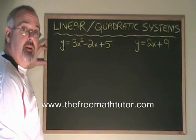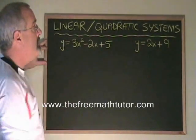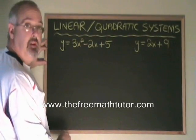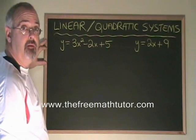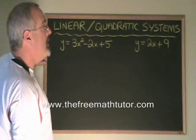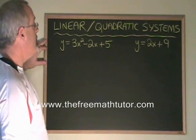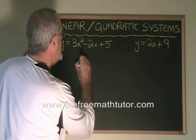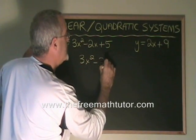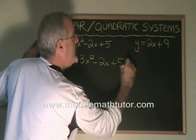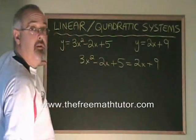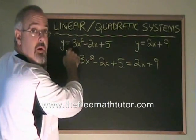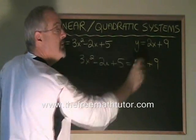What we do is we use the same methods. I'm going to use comparison to solve this system. The parabola equation is y equals 3x squared minus 2x plus 5. The straight line equation is y equals 2x plus 9. Comparison allows us to write 3x squared minus 2x plus 5 equals 2x plus 9. We are comparing what y is equal to in one equation with what y is equal to in the other.